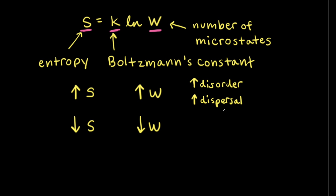Sometimes, instead of using the word microstates, people will describe an increase in entropy as an increase in disorder, or an increase in the dispersal of either matter or energy. Sometimes using these terms helps us think about entropy. However, when we're using the equation developed by Boltzmann, we should think about these terms as meaning an increase in the number of microstates, and therefore an increase in the entropy of the system.